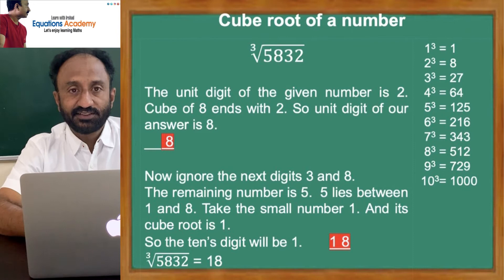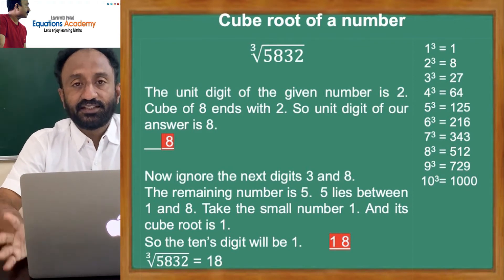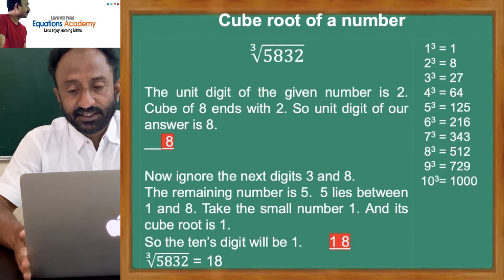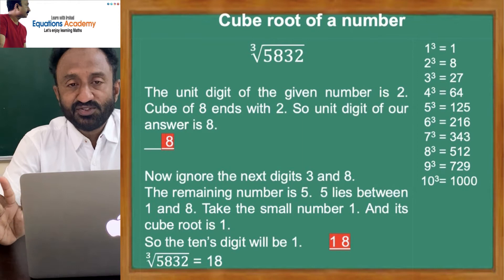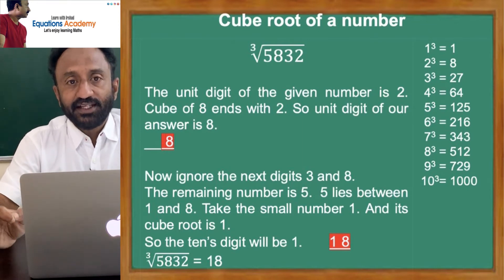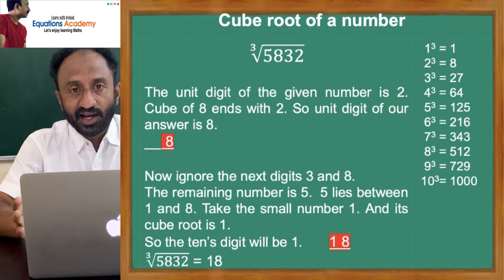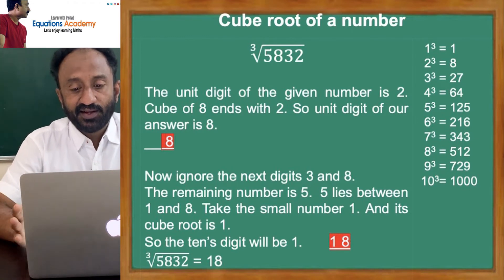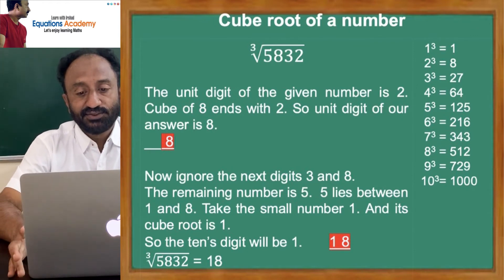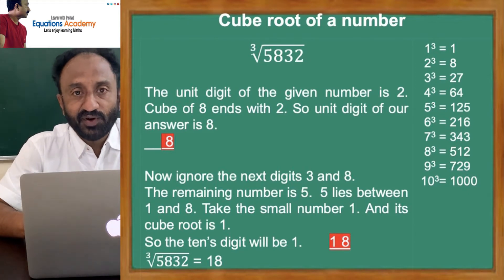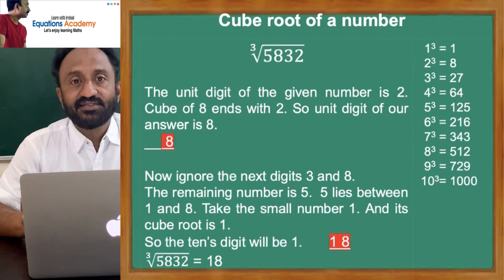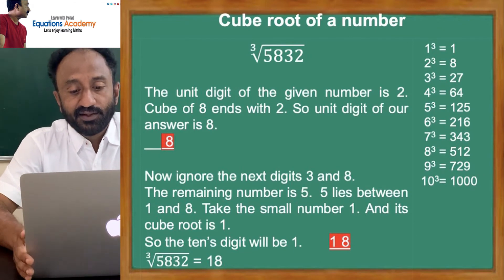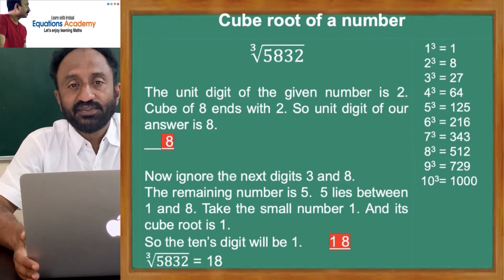Now, ignore the next two preceding digits, 3 and 8. Go to 5. Check: 1 cube is 1, 2 cube is 8. So 5 lies between the cubes of 1 and 2. Between 1 and 2, take the smaller number. Put 1 as the digit at the tens place in our answer. So our answer is 18. Cube root of 5832 is 18.